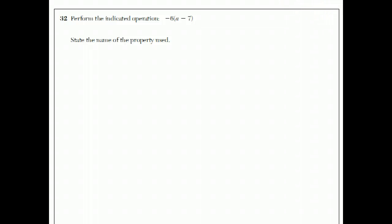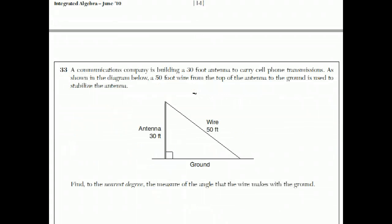Perform the indicated operation. Negative 6 times a minus 7. Well, the distributive property is when you multiply the thing outside the parentheses by each of the terms on the inside. So you get minus 6a, here's the tricky part, plus 42 because the negative 6 gets distributed through and the property used was the distributive property. You don't have to write an exclamation point. They might even tick off points if you do that. Okay, the last question on part 2.